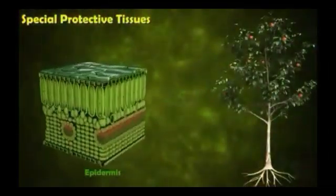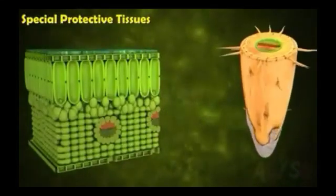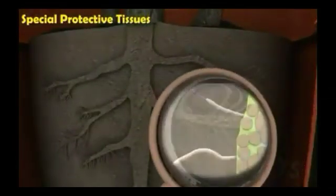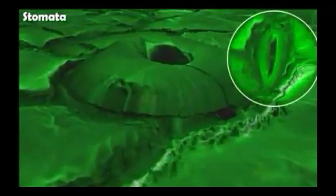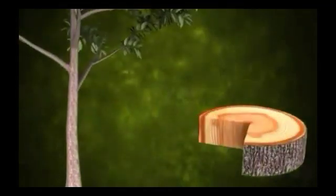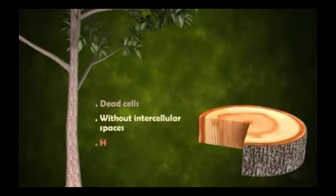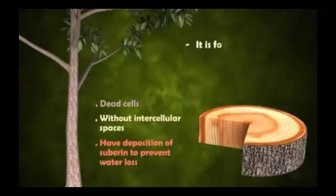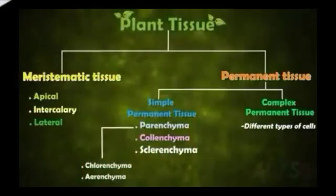Special protective tissues are seen in the stem, root, and leaf of the plant, protecting them from injury, excess water loss, and external microbes. In leaves, stomata are minute pores through which gaseous exchange takes place, guarded by guard cells. In woody stems, the outer layer is bark and the inner layer is cork. Both are made up of dead cells with no intercellular spaces. Due to the deposition of suberin they are very hard and provide support to the woody stem.